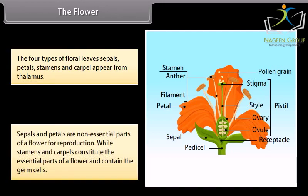Sepals and petals are non-essential parts of a flower for reproduction while stamens and carpel constitute the essential parts of a flower and contain the germ cells.